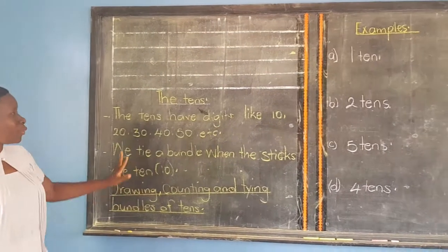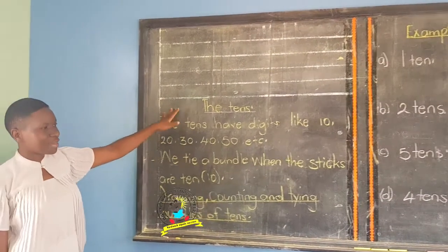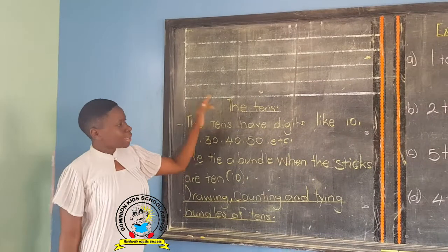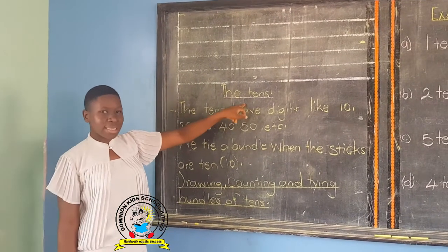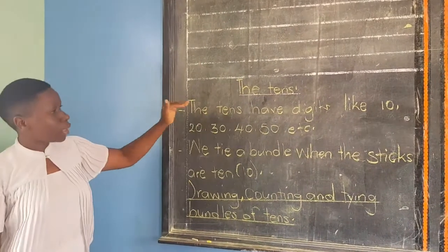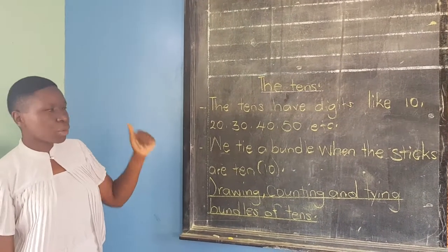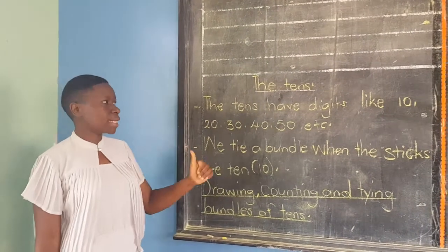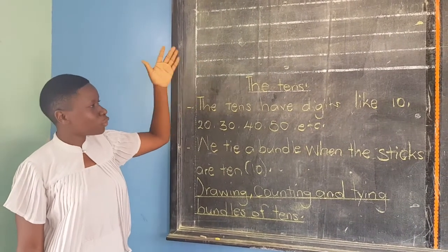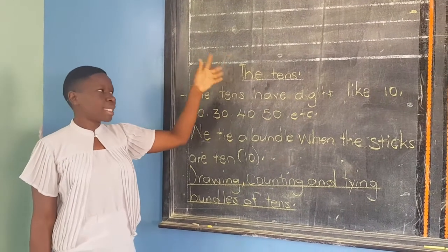This is Primary One. We are in mathematics. Today's session is about tens. Last time we learnt how to draw bundles of ones. Today we are going to learn how to draw and count entire bundles of tens.